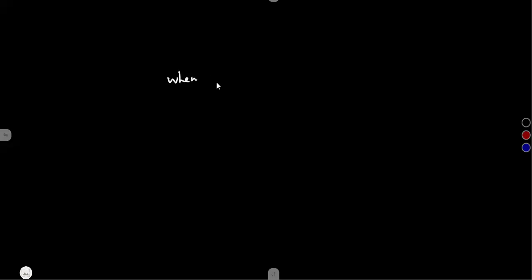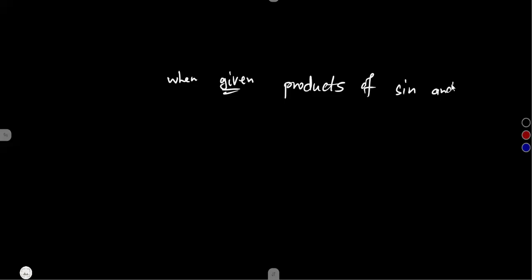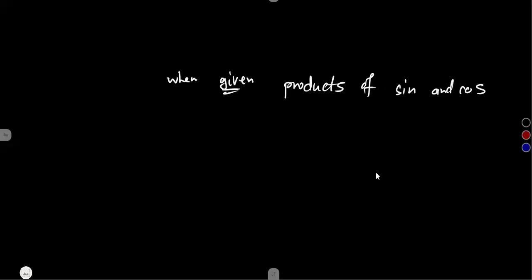These identities are used whenever we are given the products of sine and cosine — the products of sine and cosine with different coefficients.